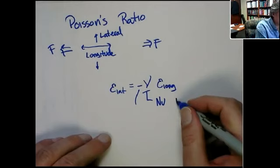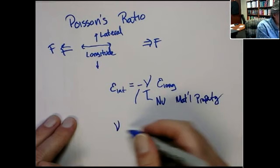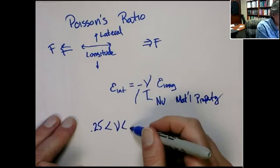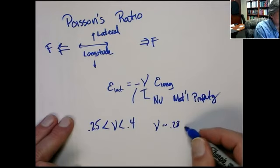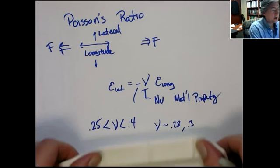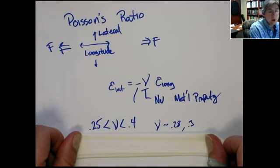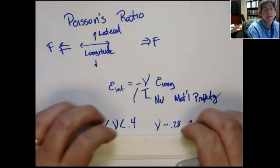This is a material property. Typically it's in the range of 0.25 to 0.4 — typically at most. For steels and aluminums, about 0.28. So what does that mean? If the Poisson's ratio is about one-third, what that's saying is: if I have a strain of 1 in the longitudinal direction, the strain in the lateral dimension is minus one-third.